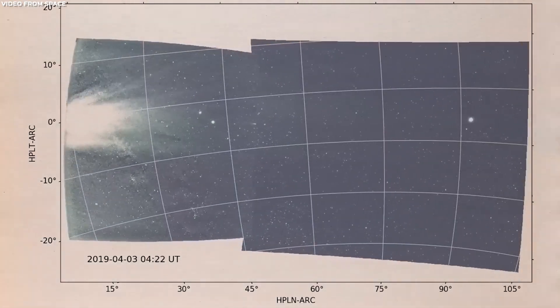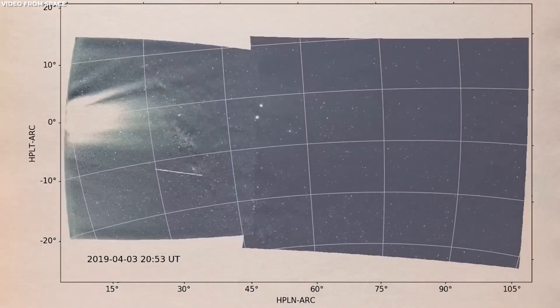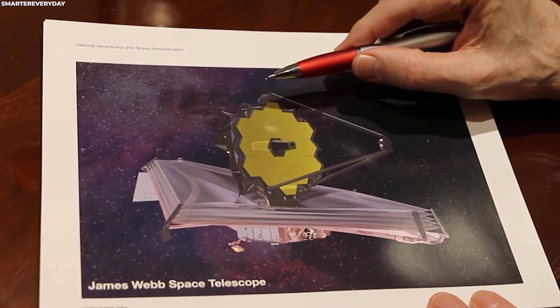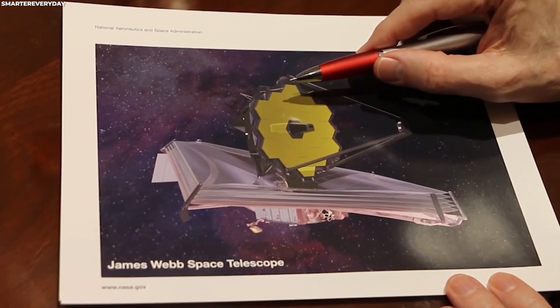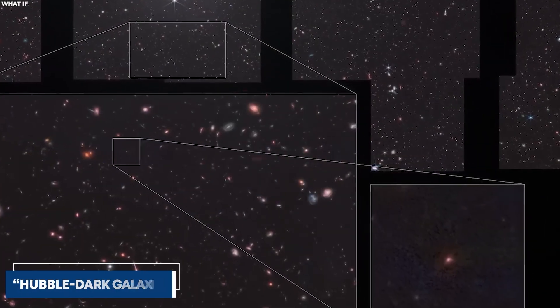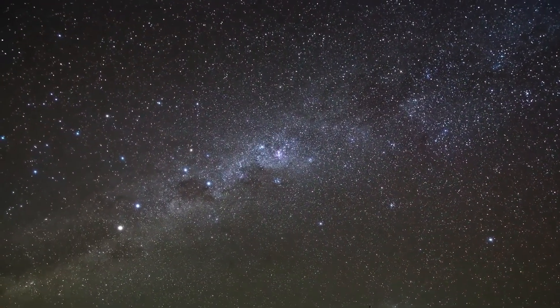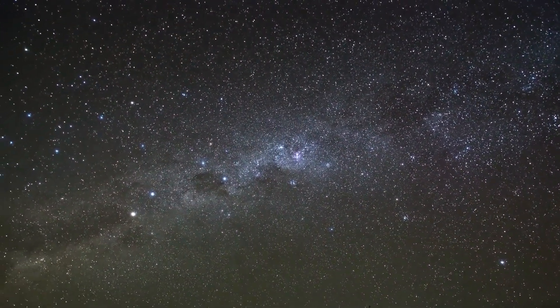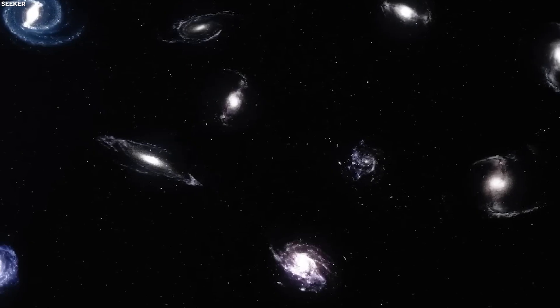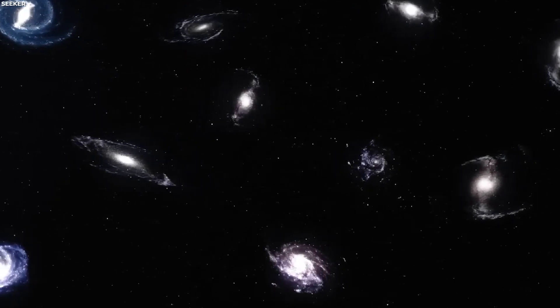One in five such galaxies remains invisible to us, forming a group of what astronomers call Hubble Dark Galaxies. That means our understanding of the history of galaxy evolution is biased, because we're only seeing the unobscured, less dusty galaxies.